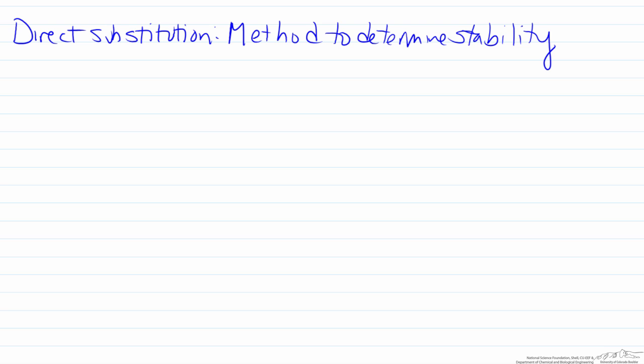In this screencast we will look at the methodology of direct substitution as a means to determine the stability of a controlled process. Direct substitution takes advantage of the concept of what dictates stability.